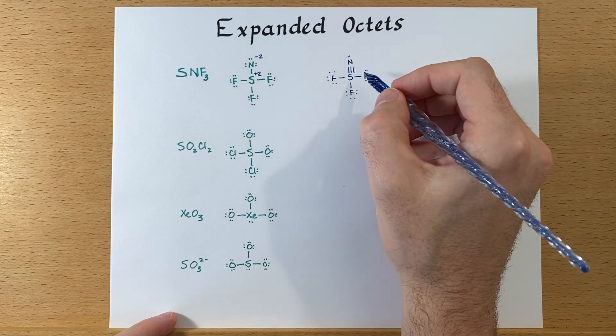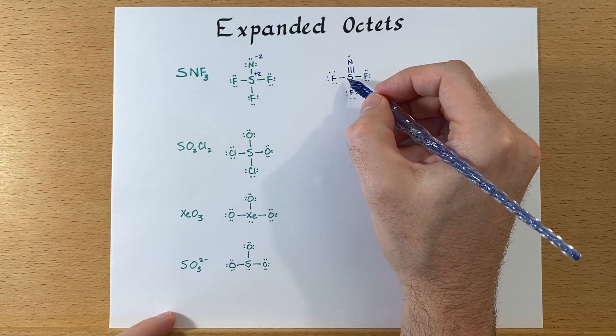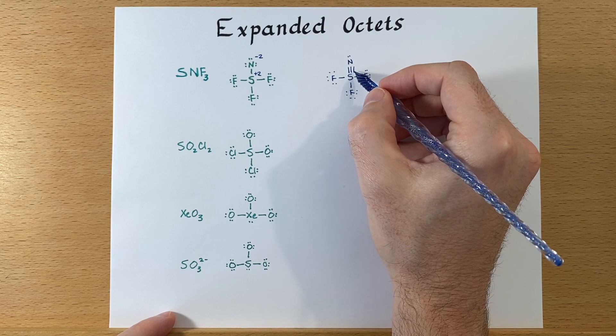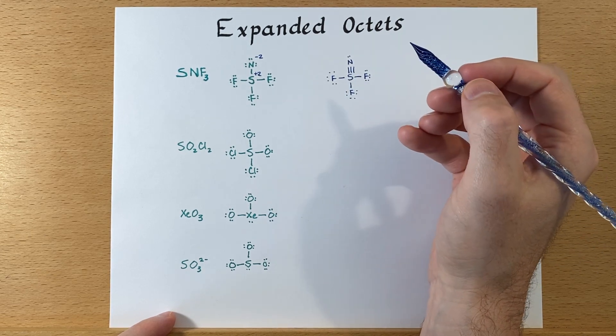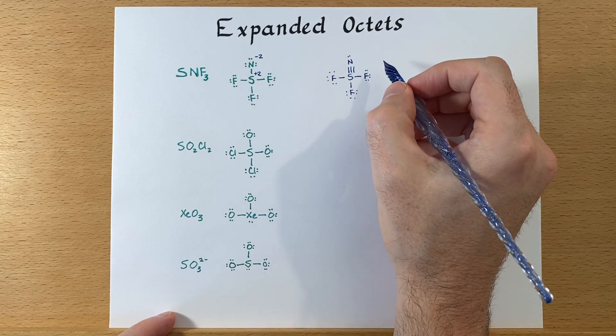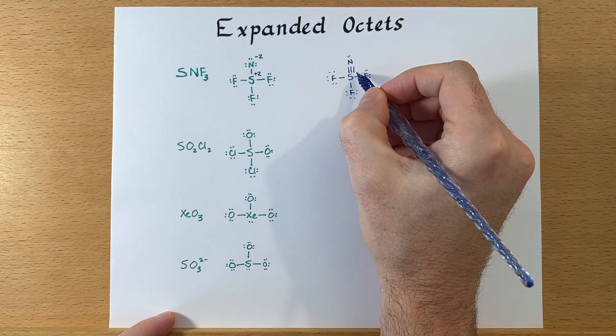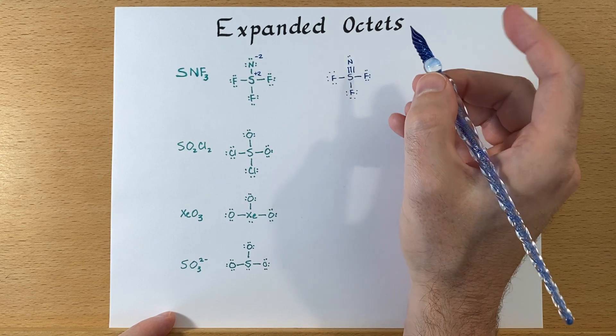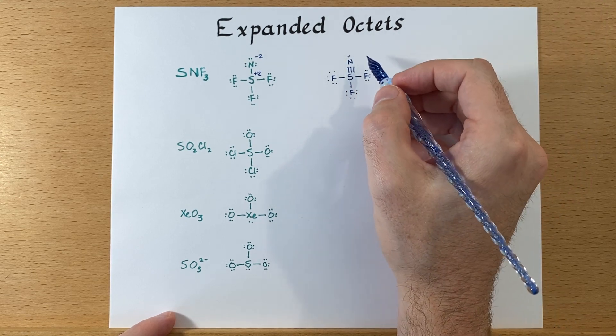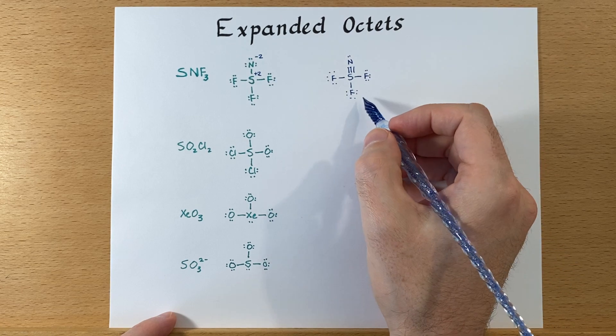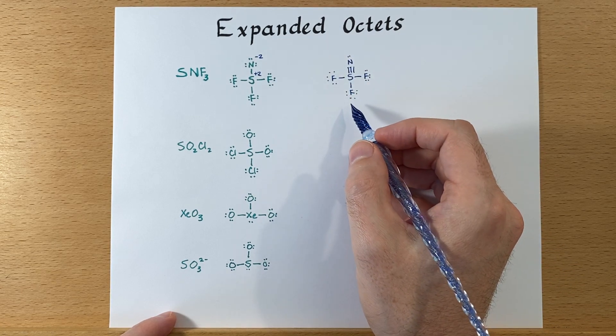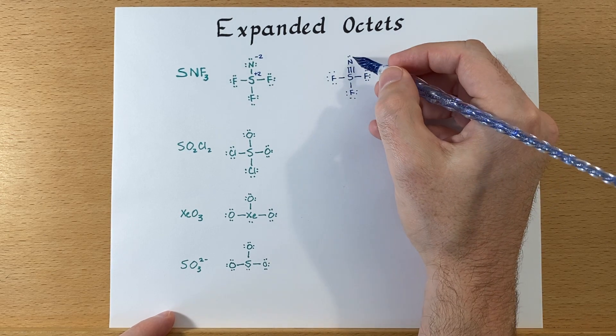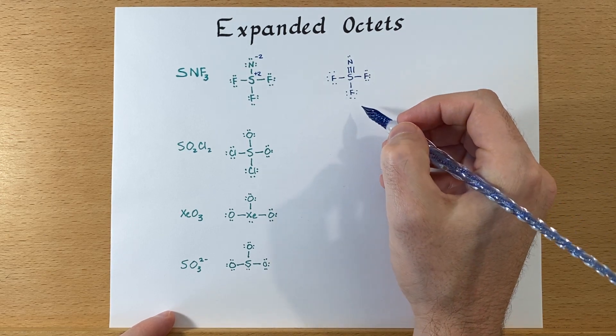So now we've expanded the number of electrons around sulfur. If we count them up, one, two, three, four, five, six. Now sulfur has six and it started with six, so the formal charge is zero now. Similarly with nitrogen, one, two, three, four, five, and it started with five. The formal charge there is zero. This is a much better structure, and it matches better with the experimental reality of the bond distance between the sulfur and nitrogen that we observe.